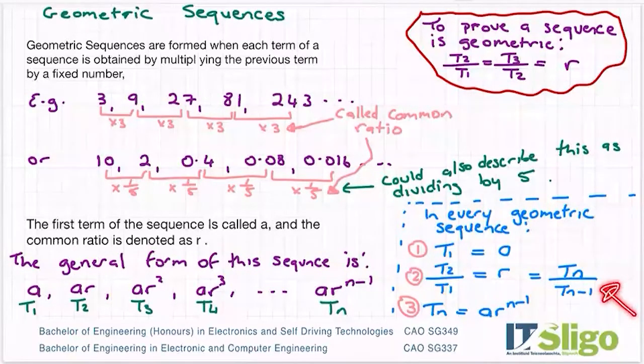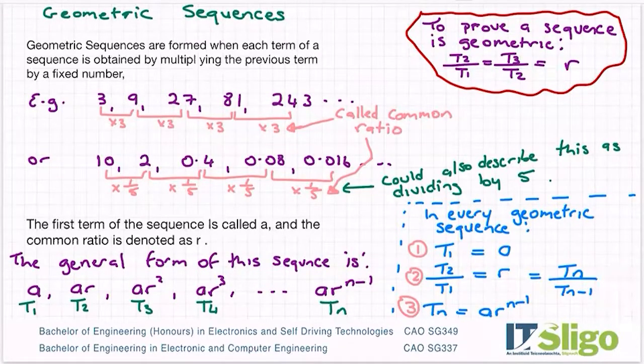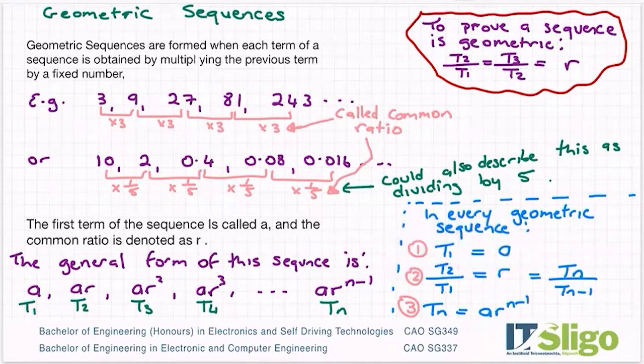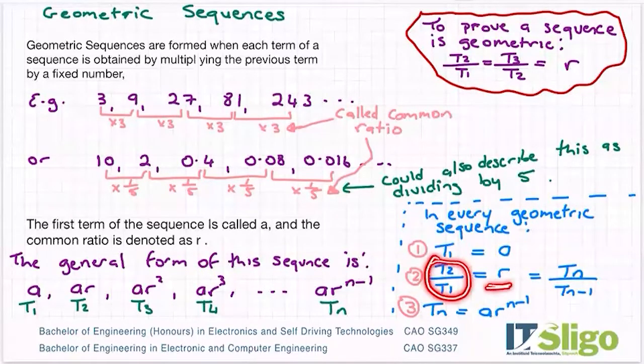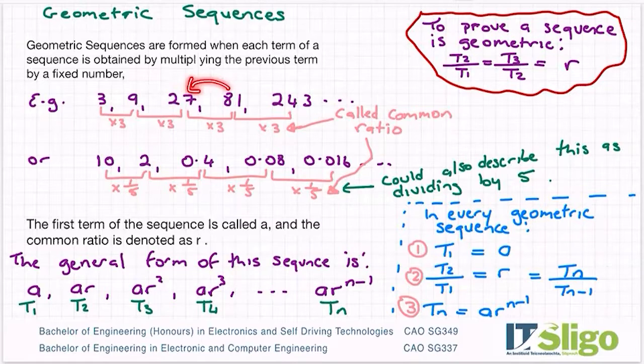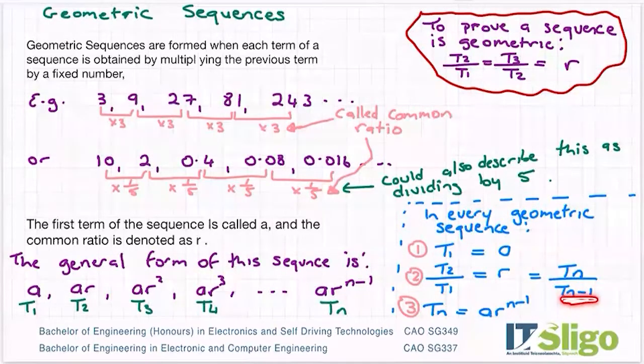Then over here in blue, some notes to remember for every single geometric sequence. Term one is called a. Two, t2 over t1 will give you r, the common ratio. Just like when we did this first example here - because it's easy to see, nine divided by three gives me the common ratio of three. You can also do t3 divided by t2, which would be 27 over nine, that would also give you three. Of course, you could do t4 divided by t3, it will also give you three. So it is also equal to tn over the one before, tn minus one. That's how you calculate r.